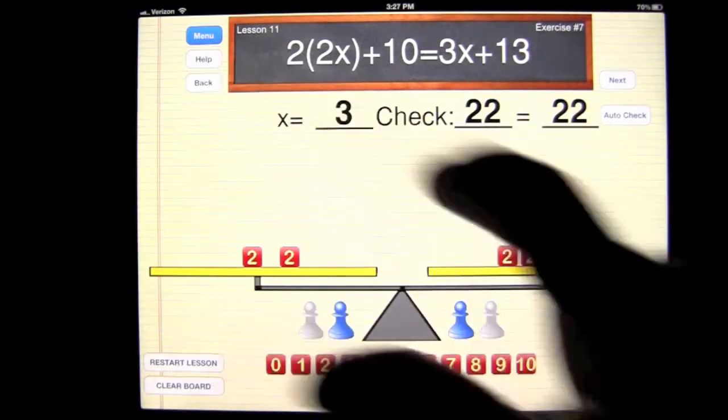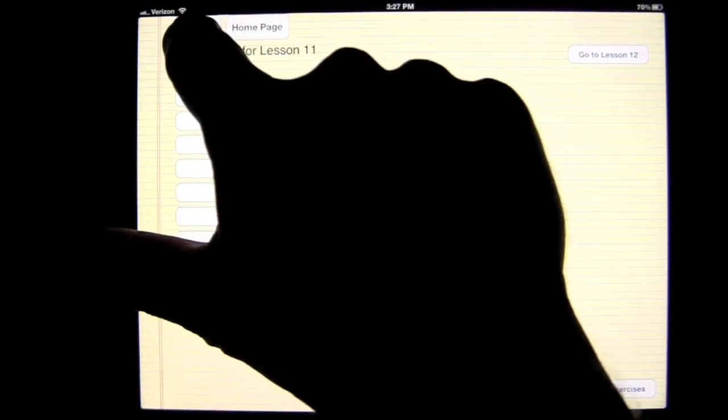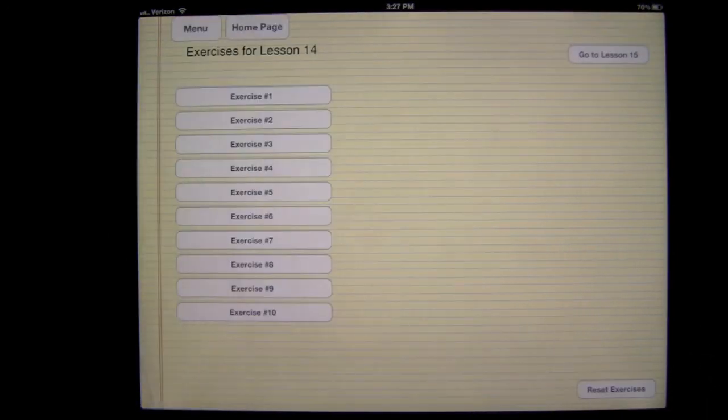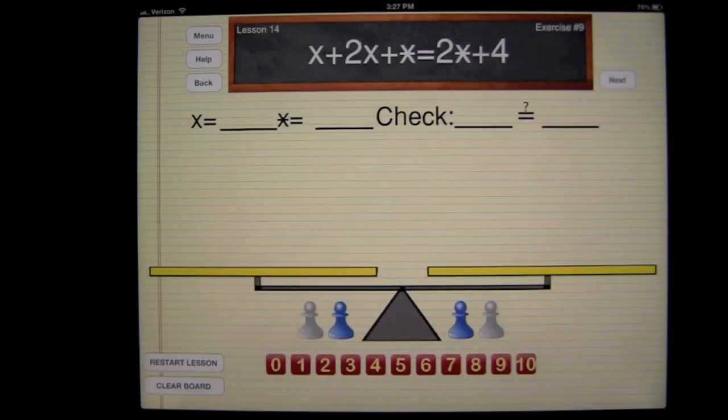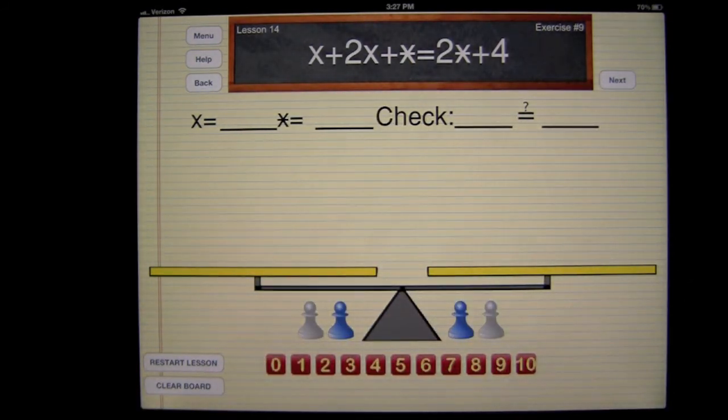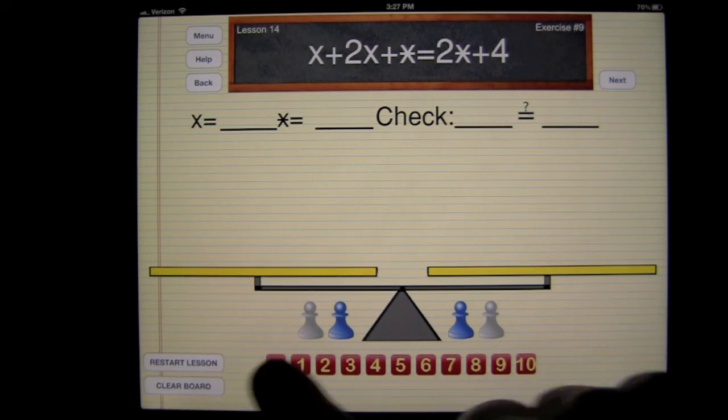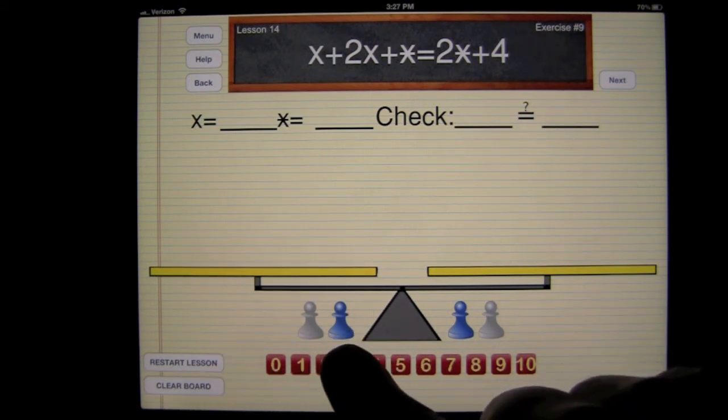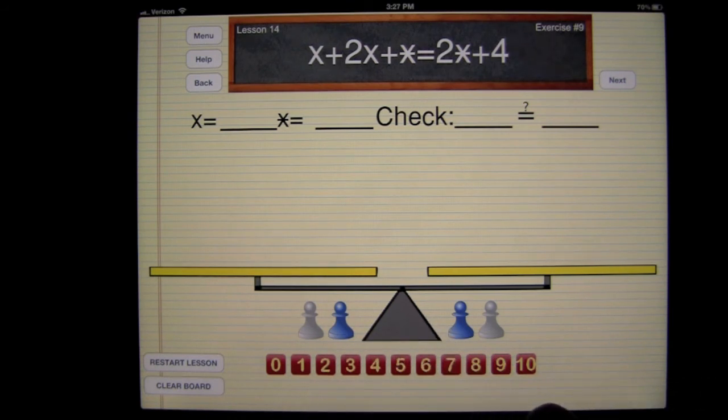Now we can exit out of here and go into the menu. And I'm just going to go out to some of the harder areas and show you that the problems get quite complicated. You can see they start adding in both the x and the star, where you're going to need to solve for both of the symbols.